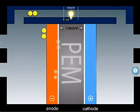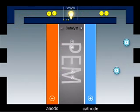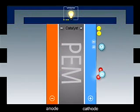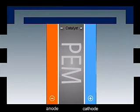On the oxygen side of the membrane, the protons and the electrons react with oxygen from the air, in the presence of a second catalyst layer, generating water and heat.